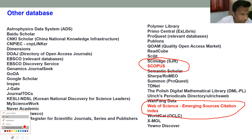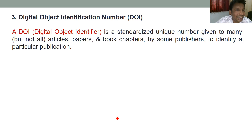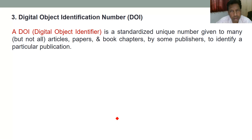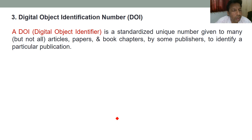Along with indexing systems, there are a few more important parameters when publishing an article or book. The first is the Digital Object Identifier, which is called DOI. This is a standard unique number assigned to articles, papers, and book chapters by the publisher. Using this DOI number, you can find the article through any search engine — it is essentially like the address of that article. Always publish a paper in journals that assign a DOI number to your article.